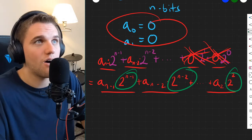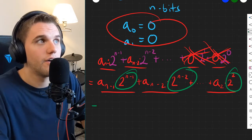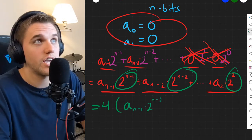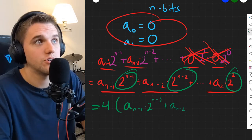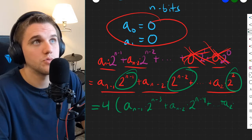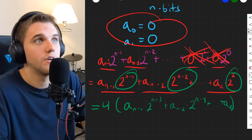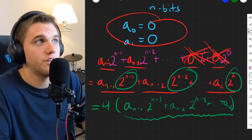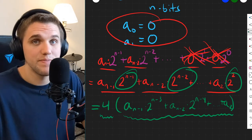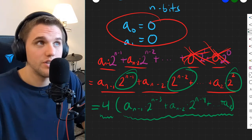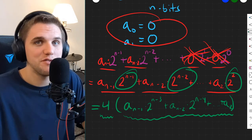Well, by algebra, this is aₙ₋₁ times 2 to the n minus 3 plus aₙ₋₂ times 2 to the n minus 4, all the way down to a₂ times... Well, we factored out that 4, so we're left with that. And so this is a positive integer, and this is a 4. Which means that if my right two bits are 0s, then that means the binary number is divisible by 4.